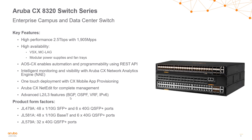They come in three form factors. You can see all three form factors on the right. We have a 48-port 1/10 gig SFP+ model, a 48-port 1/10 gig Base-T model — both of which include six 40-gig QSFP+ uplink ports — and finally a 32-port 40-gig module containing all QSFP+ ports.